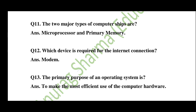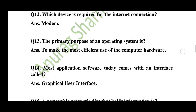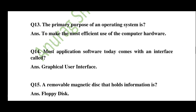Question 12: Which device is required for an internet connection? — answer: a modem. Question 13: The primary purpose of an operating system is — answer: to make the most efficient use of the computer hardware. Question 14: Most application software today comes with an interface called — answer: a Graphical User Interface.